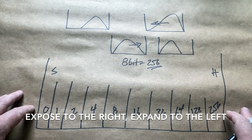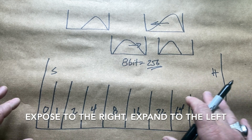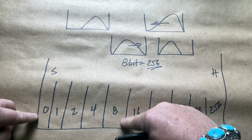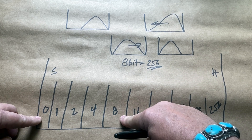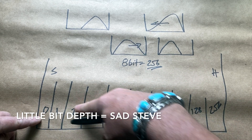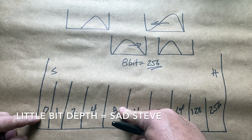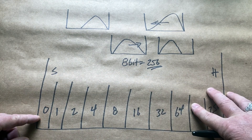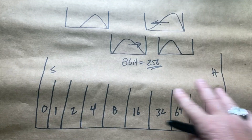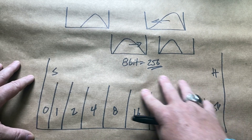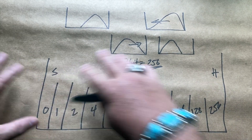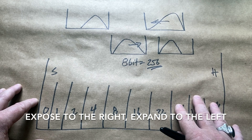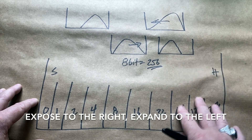So remember the mantra: expose to the right, expand to the left. You can see that when you have a histogram favoring the shadow area, look at how little bit depth you have — a tiny amount you're trying to expand to the right. Whereas having maximum bit depth in the highlights and expanding to the left is really what you want. Remember the mantra: expose to the right, expand to the left.